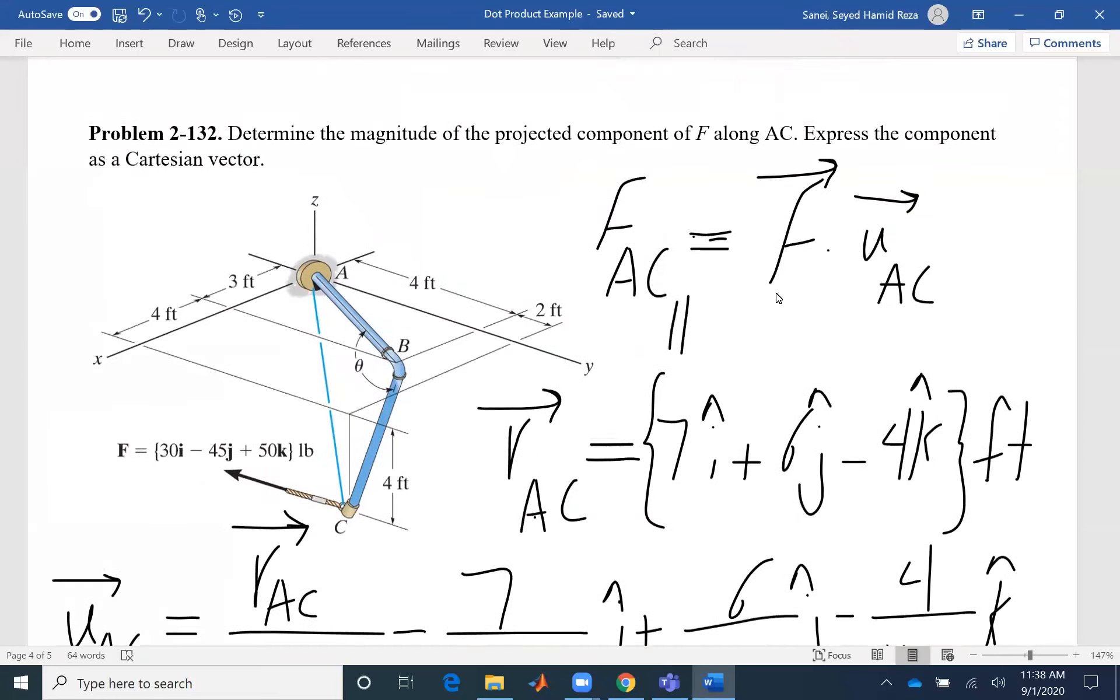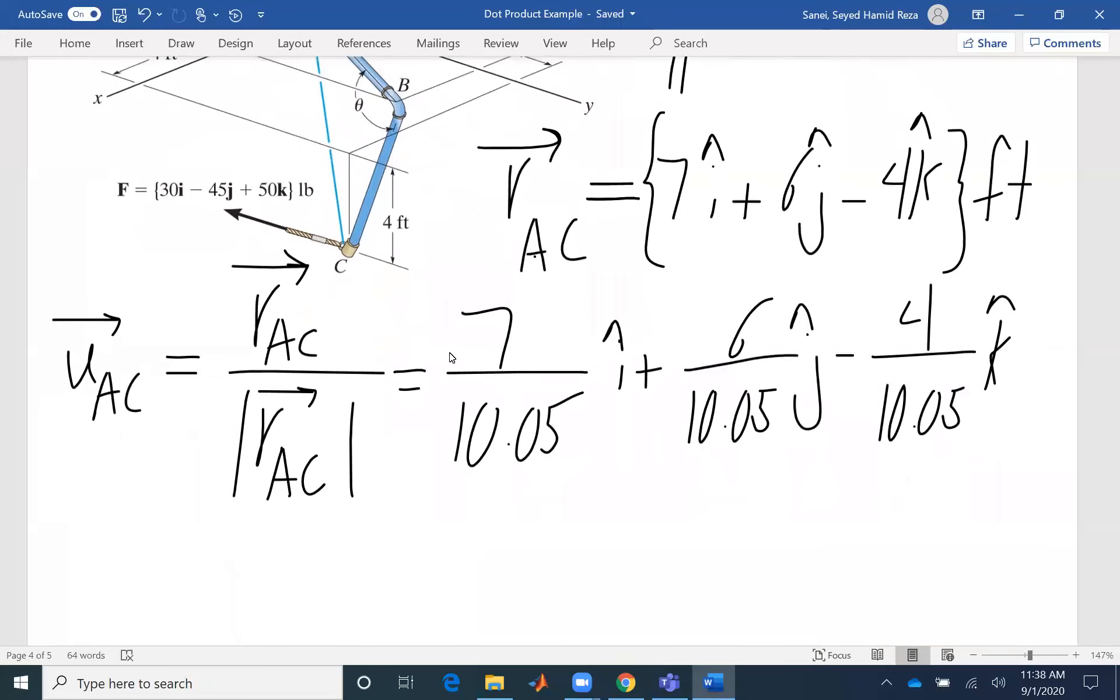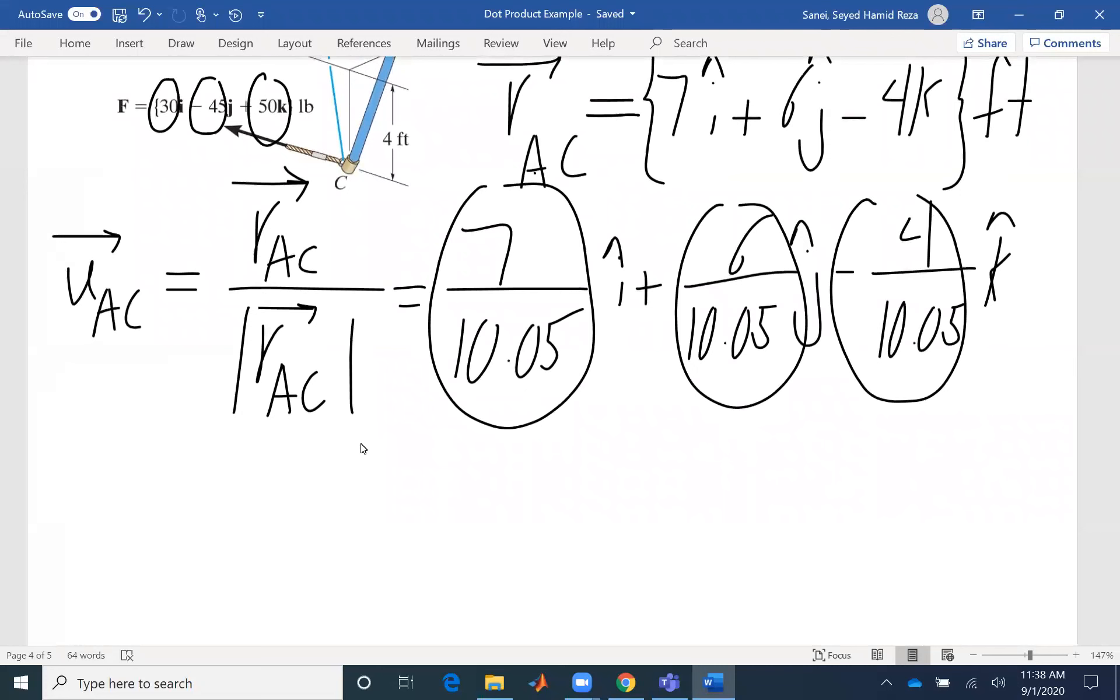I have the two vectors now. Vector F, the problem has given me the vector F, and the unit vector. So I can find the component. It's just a simple dot product, means each component multiply the first component here by the first component here plus the second component and the second component, and the third component.